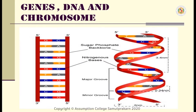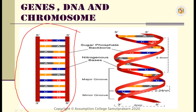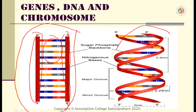This is how the DNA looks like with the sugar-phosphate backbone on the sides and the nitrogen bases in the middle. Once it is twisted, it will look like this — twisted and compact together inside the chromosome.